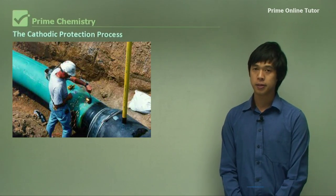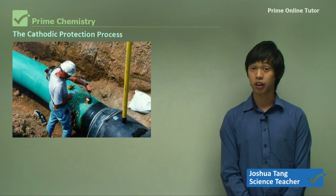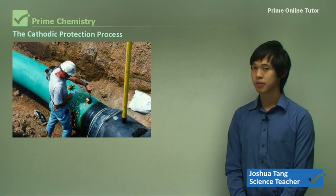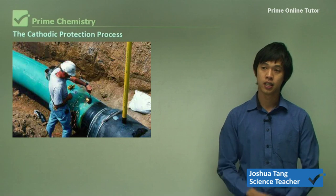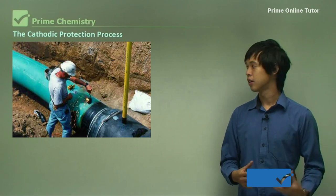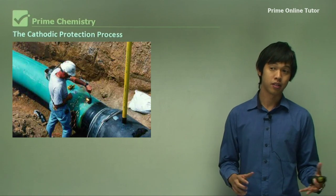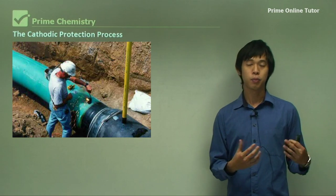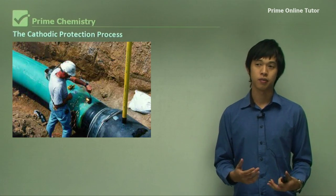Hello everyone, welcome again. Today we're going to be looking at the cathodic protection process — how we can protect metal objects like steel that may be exposed to corrosion, through the use of cathodic protection.